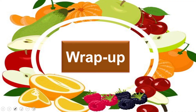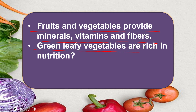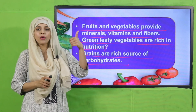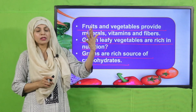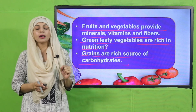Now it is time for wrap-up. Today we learned that fruits and vegetables provide minerals, vitamins, and fibers. Green leafy vegetables are rich in nutrition. Grains are a rich source of carbohydrates. We have now completed all five primary food groups: dry fruits, meat, dairy, fruits and vegetables, and grains — all five are very important for our health.